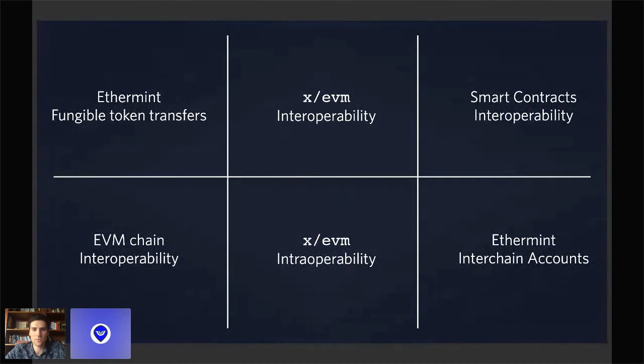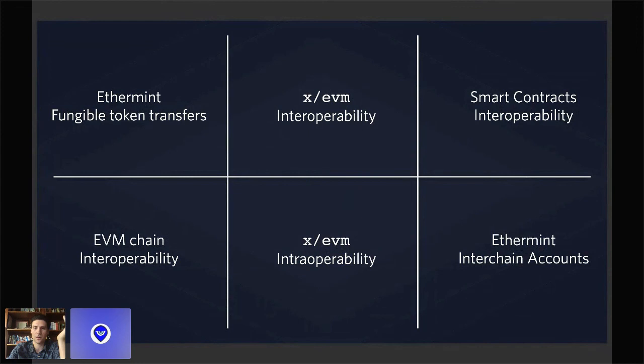Why are there so many approaches to Ethereum-Cosmos gateways? Because there are different compatibilities and different needs in terms of smart contract interoperability on EVM specifically. By using IBC, these solve the interoperability side between Cosmos chains and other chains that have BFT consensus and fast finality.